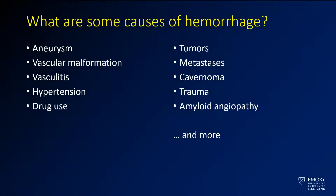In general, aneurysm, vascular malformation, vasculitis, and hypertension can all cause hemorrhage. The things you'll probably see most commonly working in the clinic are hypertensive hemorrhage or aneurysmal hemorrhage. When you have younger patients, drug use is a very common factor. When you see more focal or multifocal areas of hemorrhage, you've got to think about other focal lesions like tumors, metastases, cavernomas, trauma, and a number of other conditions.